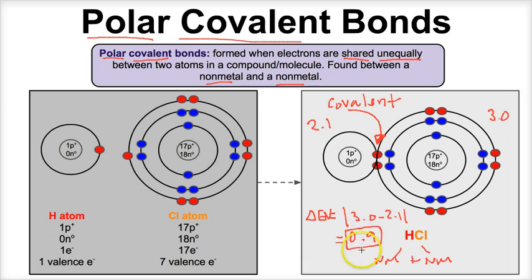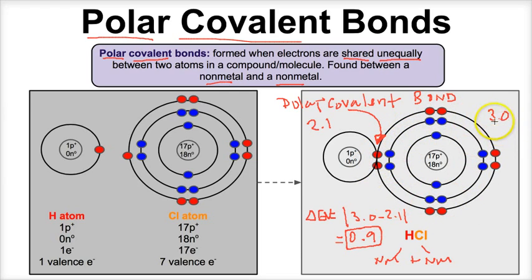Anytime you have an electronegativity difference between about 0.5 and approximately 1.6 or 1.7, that is going to be a polar covalent bond. The electrons being shared are not being shared equally — they're spending most of their time surrounding the more electronegative element, which is chlorine. Because electrons are negative and spending most of their time around chlorine, that side becomes slightly more negative and the hydrogen side becomes slightly more positive.